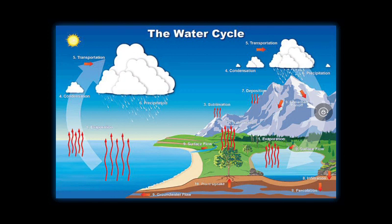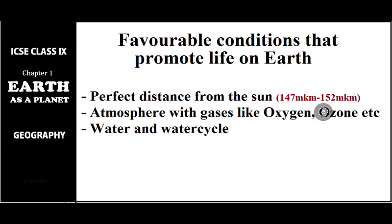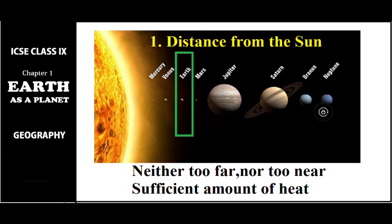All these cycles are essential for the existence of life. Now let's see the main factors that help in the existence of life on earth. The three most important factors are: first, the perfect distance from the sun; second, the presence of a thick atmosphere with gases like oxygen, nitrogen, CO2, and ozone; and third, the availability of water and the water cycle on earth.